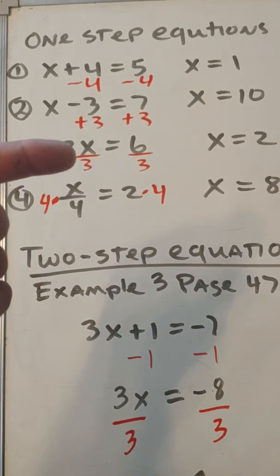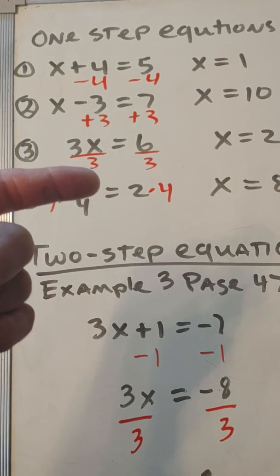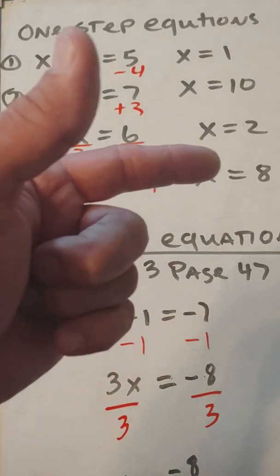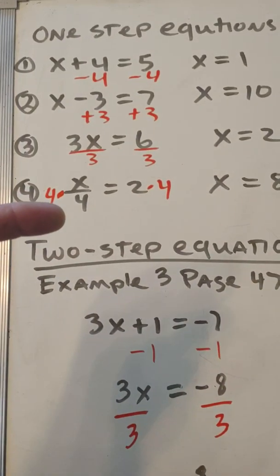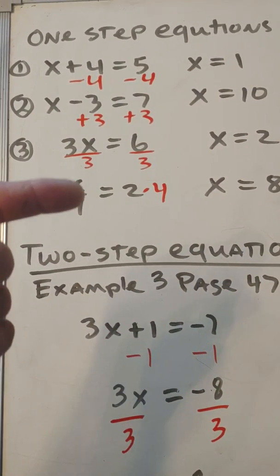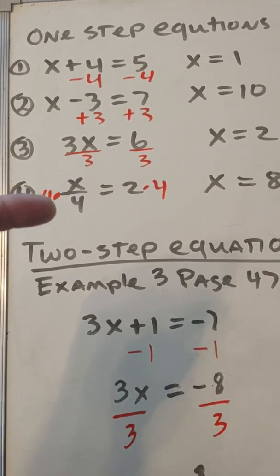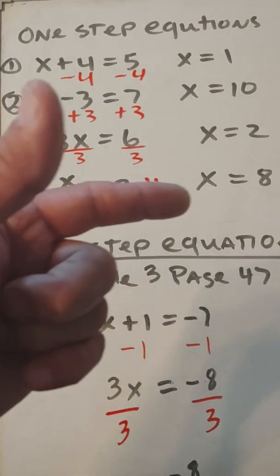Here, 3 is multiplying times x. The opposite of multiplication is division, so we're going to divide both sides by 3. We get x equals 2. Here, we're dividing 4 into x, so we're going to multiply by 4 on both sides. We get x equals 8.